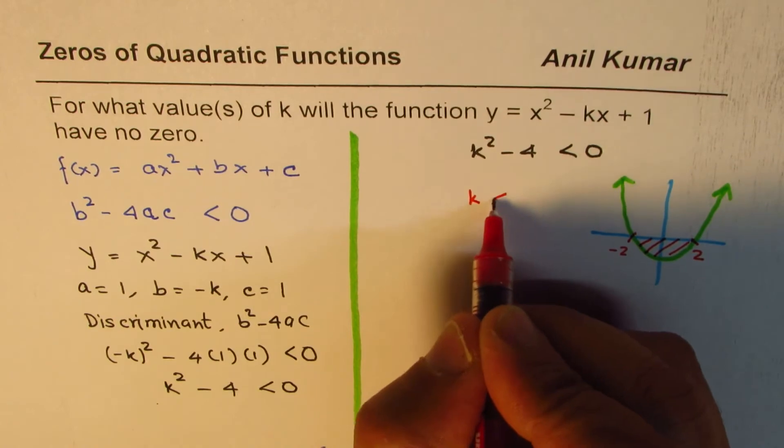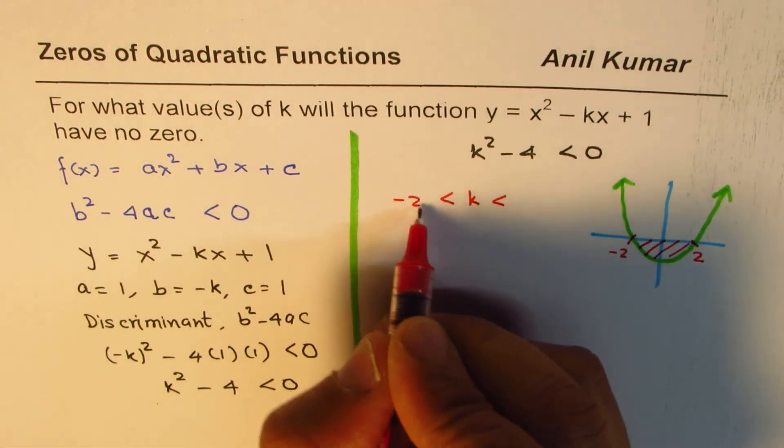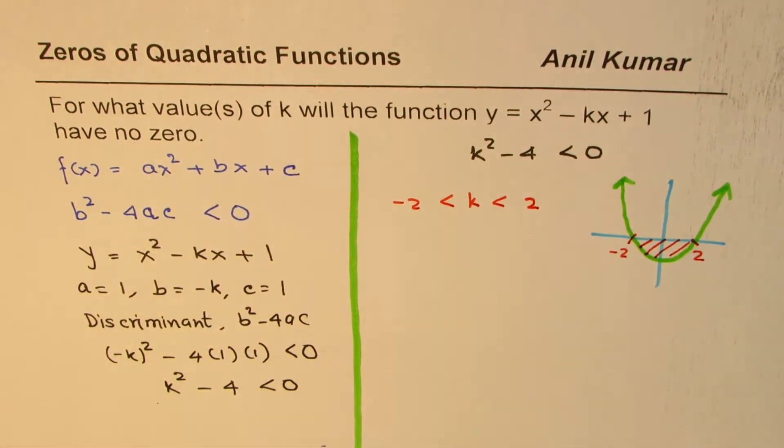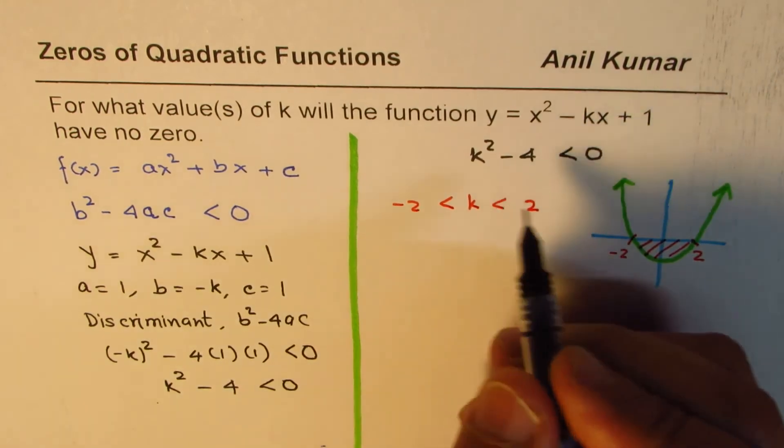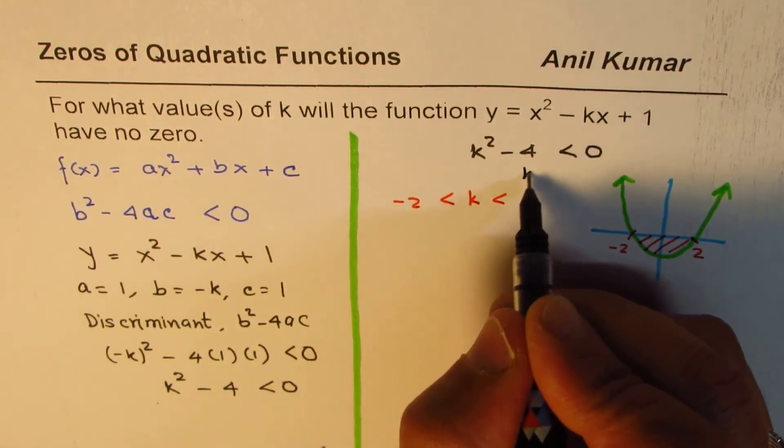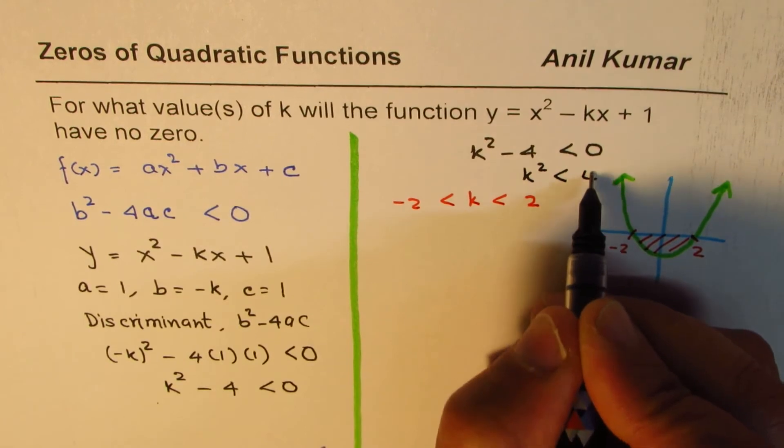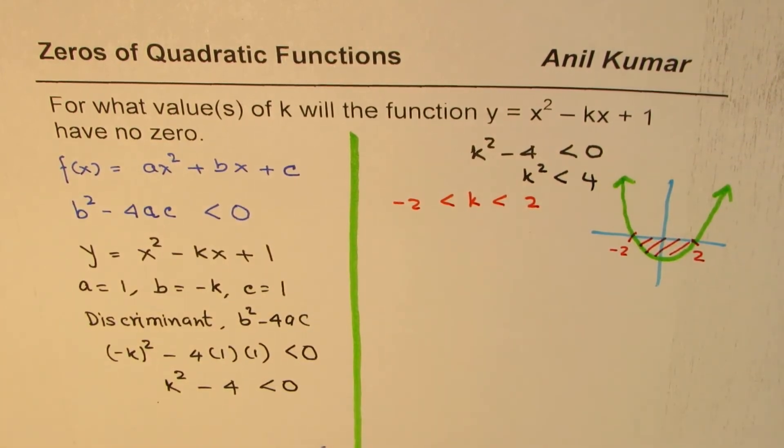So one of the solutions here is that the value of k is actually between -2 and +2, which you could go one more step and say k² < 4.